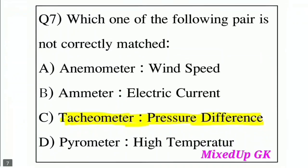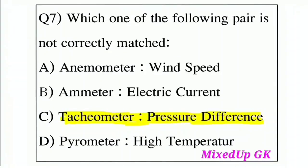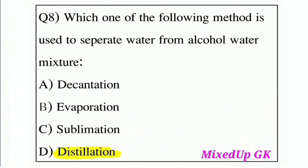Question 7: Which one of the following pairs is not correctly matched? Option A: Anemometer – Wind speed, Option B: Ammeter – Electric current, Option C: Tachometer – Pressure difference, Option D: Parameter – High temperature. The correct answer is Option C: Tachometer – Pressure difference.